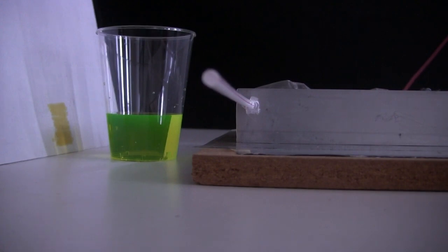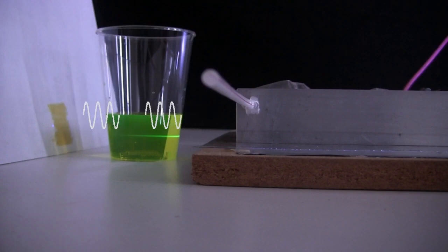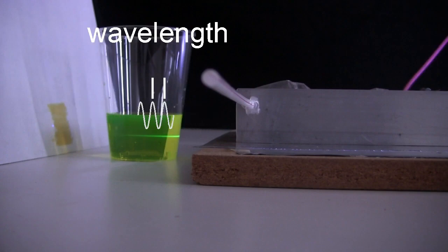First, a little background. Light, as in the light from this tea laser, is in the form of electromagnetic waves, illustrated simply like this. The waves can be characterized by their wavelength.